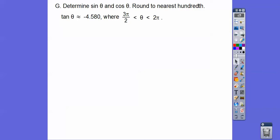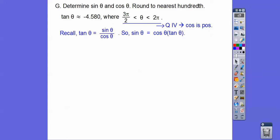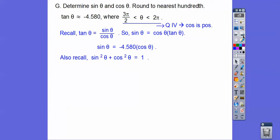Determine the sine and cosine, rounded to the nearest hundredths. We're in quadrant four, so cosine is positive and sine and tangent are negative. Remember tangent is sine over cosine, so sine equals cosine times tangent. We substitute that in — negative 4.580 — and then we use the identity sine squared plus cosine squared equals one.